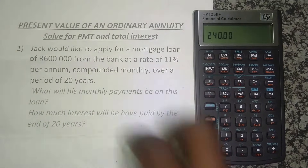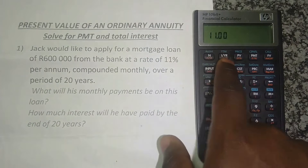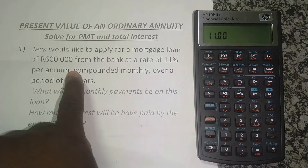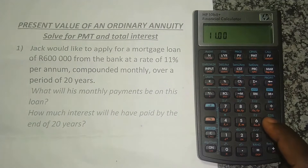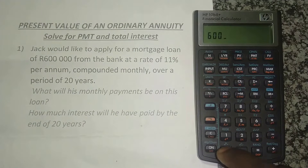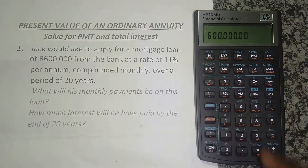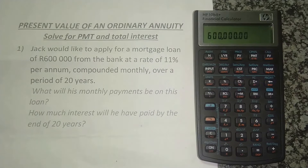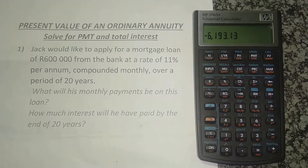The interest rate is 11%, so we just put in 11 and press I/YR. The 600,000 mortgage loan is what he will receive today, so I press 600,000 and put that as PV or present value. What I want is his monthly payment on this loan, which is the PMT, so I just press PMT and there we have it.